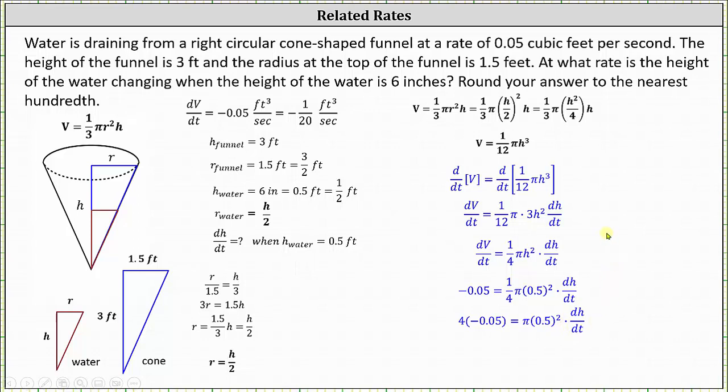And now to solve for dh/dt, we divide both sides by pi times the square of 0.5. And now we go to the calculator, which I've already done. Rounding to two decimal places, we have dh/dt is approximately negative 0.25 feet per second.